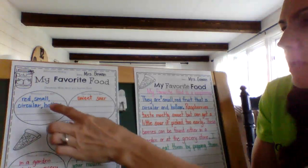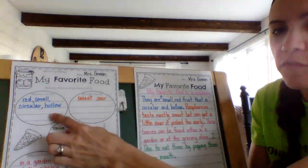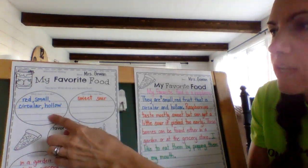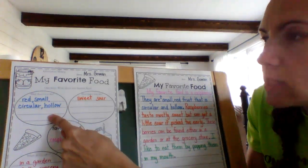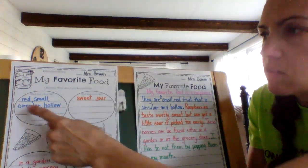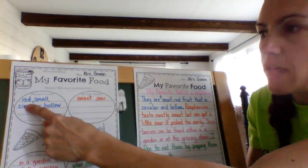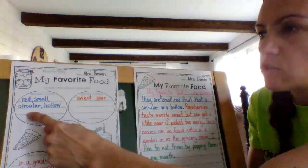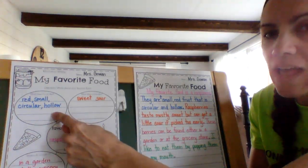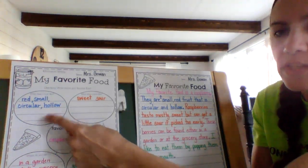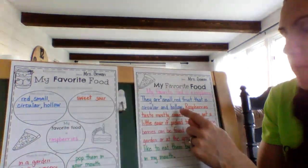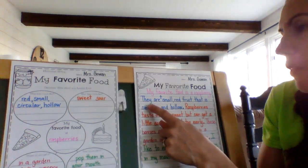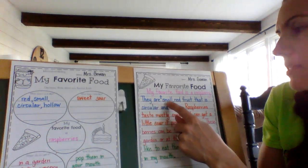Then I'm going up here to the first circle, which says what does it look like. I said it was red, small, circular, and hollow. So I took those words and made them into a sentence: they are a small red fruit that is circular and hollow.